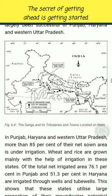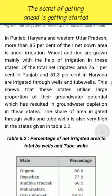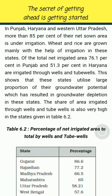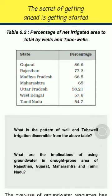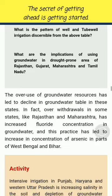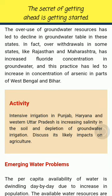In Punjab, Haryana and Western Uttar Pradesh, more than 85% of their net sown area is under irrigation. Wheat and rice are grown mainly with the help of irrigation in these states. Of the total net irrigated area, 76.1% in Punjab and 51.3% in Haryana are irrigated through wells and tube wells. This shows that these states utilize a large proportion of their groundwater potential, which has resulted in groundwater depletion. The overuse of groundwater resources has led to a decline in groundwater table. Over-withdrawals in some states like Rajasthan and Maharashtra have increased fluoride concentration in groundwater, and this practice has led to an increase in concentration of arsenic in parts of West Bengal and Bihar.